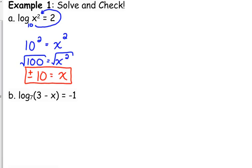Let's look at B. The log base 7 of 3 minus x is equal to negative 1. Again, the variable is inside the logarithm, so the only way to get it out is to write this in exponential form. This time, the base is 7. 7 to the negative 1st is equal to 3 minus x.